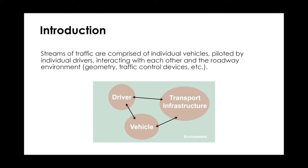The driver and the vehicle interact, but they also interact with the infrastructure — the road, signs, intersections, and traffic control devices around us. For example, the driver sees a red light, pushes the brake, and the vehicle brakes. If the vehicle is connected, it may send messages to the traffic signal. All three elements exist within a bigger environment — sunny, rainy, snowy, hot, or cold — which affects driver and vehicle performance. In traffic engineering, it's important to consider all four elements as a system.